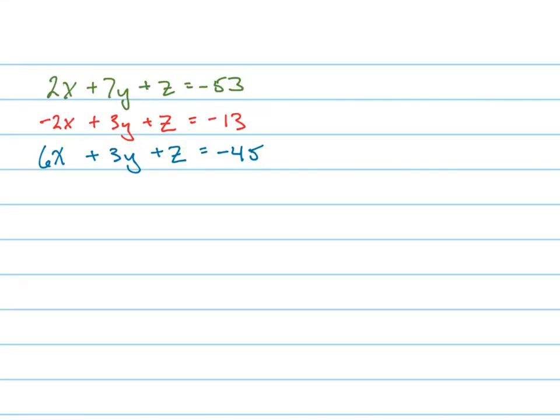We're going to solve a system of three equations and three variables and we're going to do it a couple of different ways. The first way we're going to use is called substitution. Substitution basically says you're going to take one of the equations — it doesn't really matter which one, but sometimes it's smarter to use one over another.